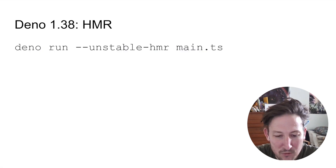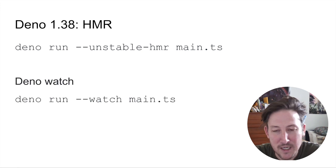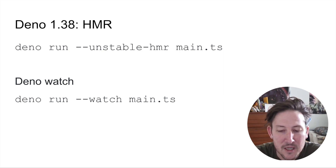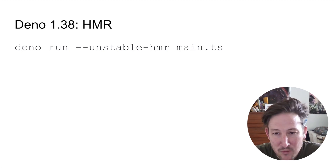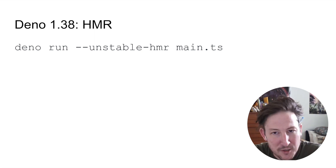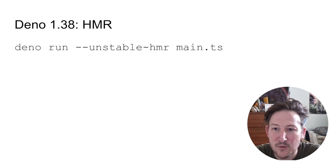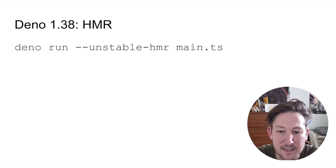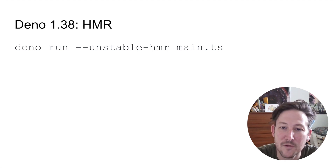Dino 1.38 also has hot module reloading, which is kind of improved watch capabilities. Right now, Dino has 'deno run --watch', which essentially watches all of the source code files in your project and reloads them on change. Hot module reloading is a more advanced version of that, where it also watches all of your source files, and when one of those changes, actually sends a diff of the updated source code down into V8 and updates the program on the fly without restarting the server.